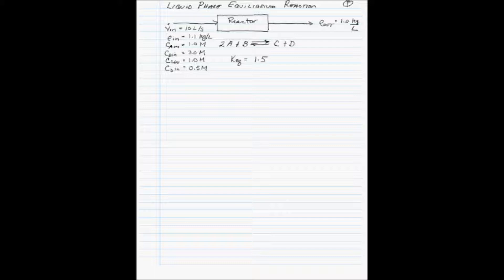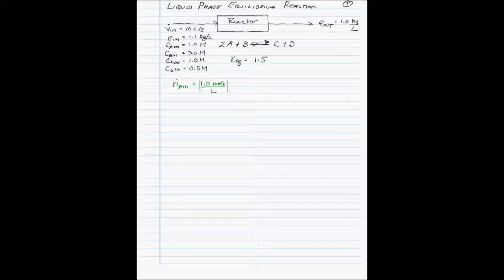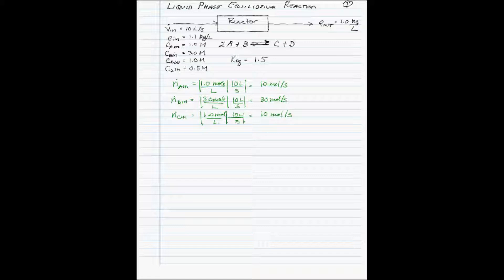We're given that the outlet density is 1.0 kilograms per liter. The first thing we want to do is determine the molar flow rates of each component entering the reactor. We take the respective concentrations and multiply by the volumetric flow rate. Component A gives 10 moles per second, B gives 30 moles per second, C gives 10 moles per second, and D gives 5 moles per second.